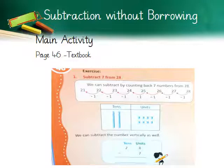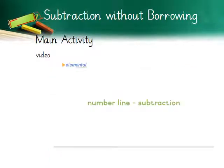Now look at the given question carefully: 28 minus 7. It has been illustrated on the number line. You subtract by skipping 7 numbers, starting from 28. At which number do you land? Yes — at 21. So our answer is 21.